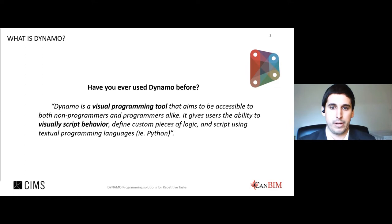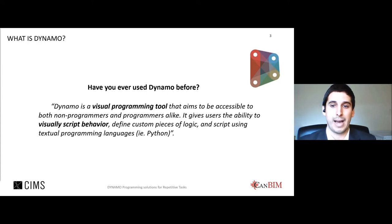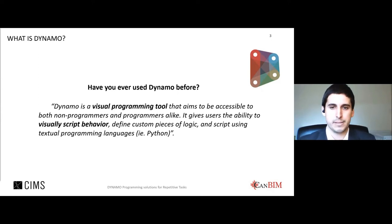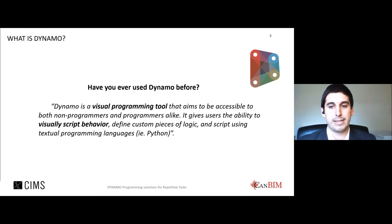That means that designers, engineers, or construction professionals without any computer-related background or who do not know how to write code can access basic but powerful scripting. Scripting is a type of coding used to automate processes. Dynamo provides the flexibility to explore inaccessible places inside the general functionalities of Revit, such as the API (Application Program Interface), and to manipulate large amounts of data and complex geometry with precision.